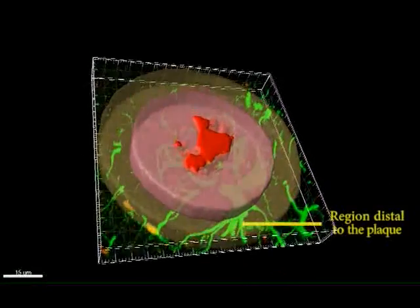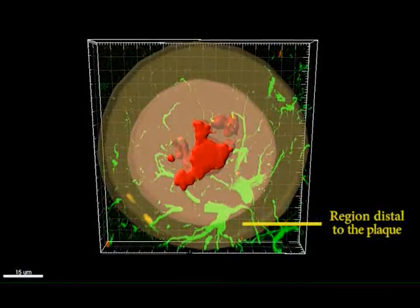A second cylinder, here in yellow, is drawn and identified as the region distal to the plaque.